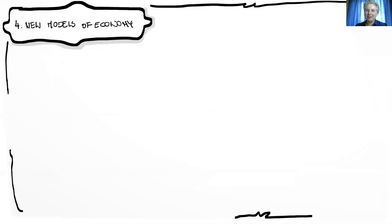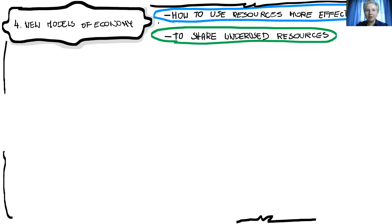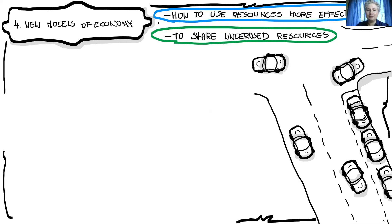Talking about environmental economics, the natural question is how to use resources more effectively. One answer is to share underused resources, because we already have a lot of goods and services we paid for but don't use all the time. When one person doesn't need them, another person could use them, paying a small amount — a kind of rent. A good example of this idea is the problem with cars in cities today.